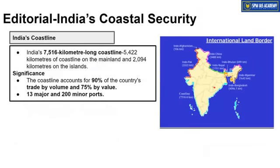The EEZ extends to 200 nautical miles. If two countries share an EEZ, like India and Bangladesh, they divide it by consensus. If consensus cannot be reached, the matter goes to the International Tribunal on the Law of the Sea (ITLOS). This is exactly what happened in the India-Bangladesh case — since they couldn't agree on maritime boundary demarcation, the matter was resolved at the international tribunal.